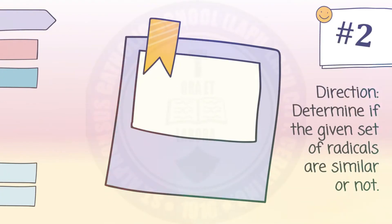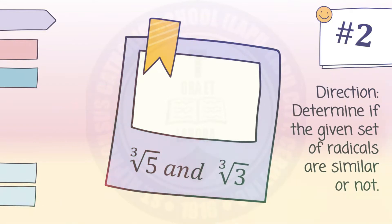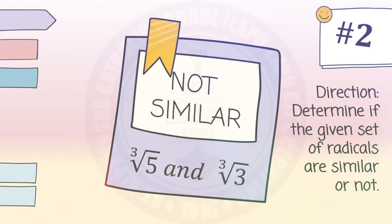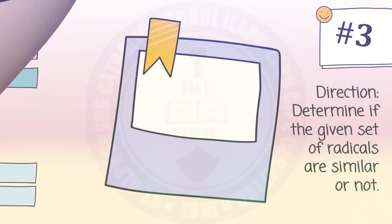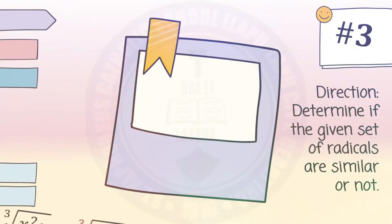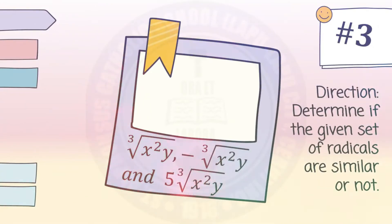Example number two: cube root of five and cube root of three. These two radicals are not similar. Though they have the same index, which is three, they don't have the same radicand — one is five and the other is three. Number three: cube root of x squared y, negative cube root of x squared y,